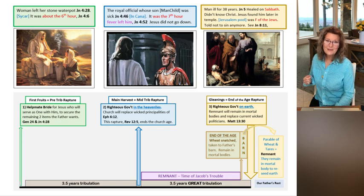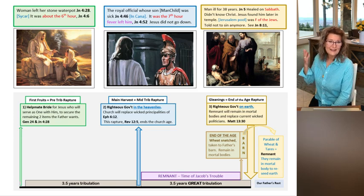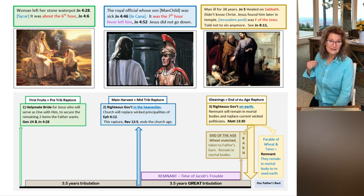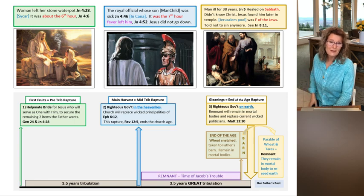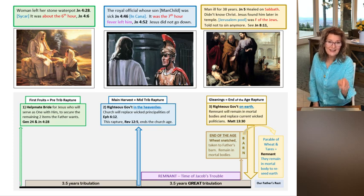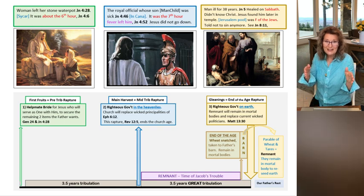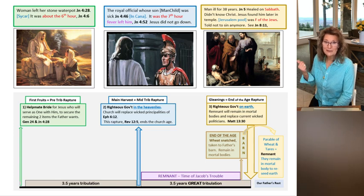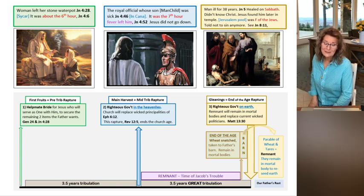Of course, the glorified raptured bride and church and those who died during the millennial reign will not be able to sin anymore once they step into their eternal body, but those who are living on the earth will have the opportunity to sin. So Jesus was telling the remnant, you know all that you went through for that seven year tribulation and especially the time of Jacob's trouble, don't sin anymore or something worse than that is going to happen to you.